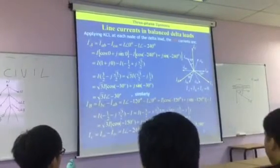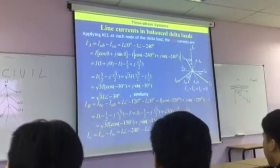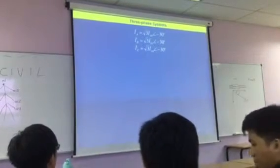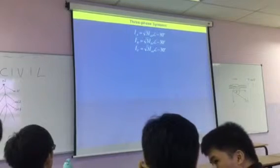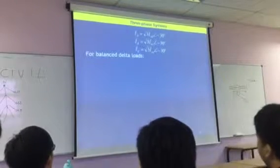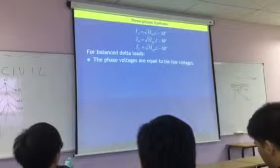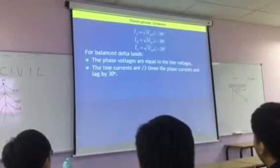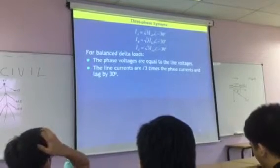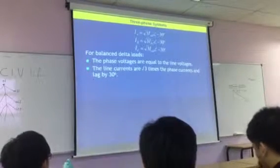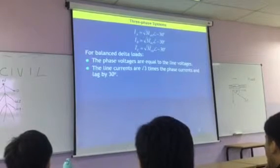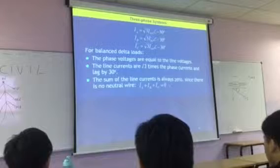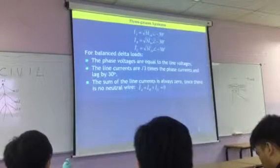So IA plus IB plus IC is going to be zero. And as I say, they're basically 30 degrees. So for balanced delta loads, the phase voltages are equal to the line voltages. The line currents are root 3 times the phase currents, and the line, done by 30 degrees. And the sum of the line currents is always zero, since there is no neutral wire. Because that's one of the things about delta circuits.